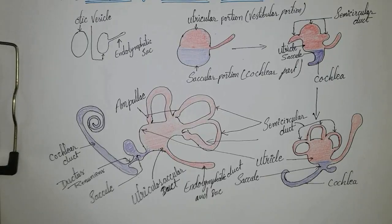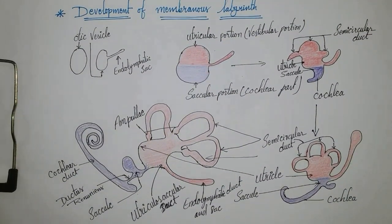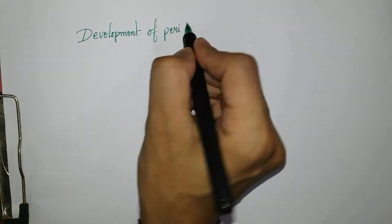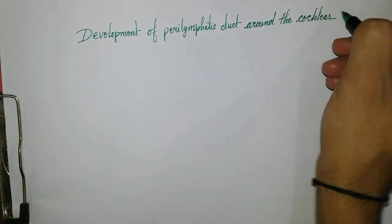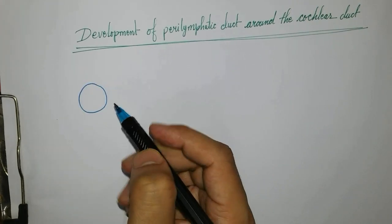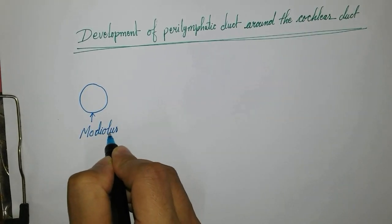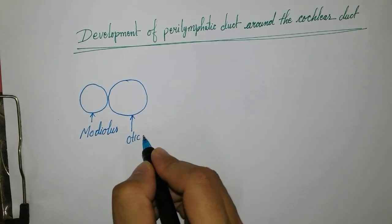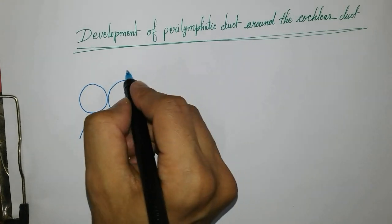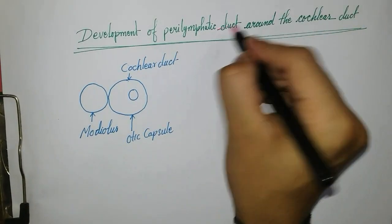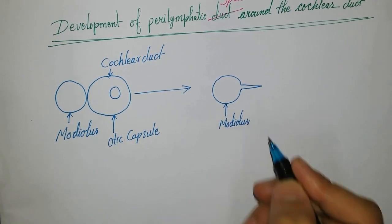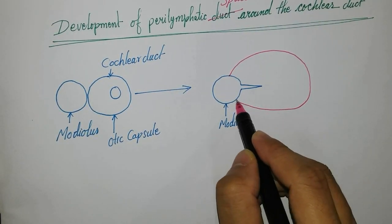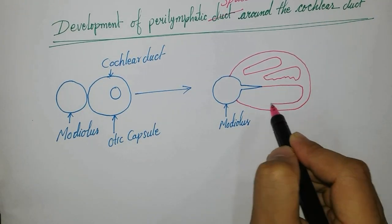The cochlear duct, also called the duct of the cochlea, is also known as the organ of Corti. This completes the development of the membranous labyrinth. Next, we will see the development of the perilymphatic space around the cochlear duct. The modiolus and the otic capsule are attached together, and the perilymphatic space surrounds the cochlear duct.